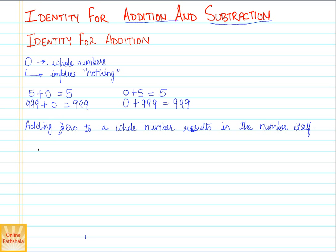We say that 0 is the identity for addition of whole numbers. This is an important result, so we can highlight it.